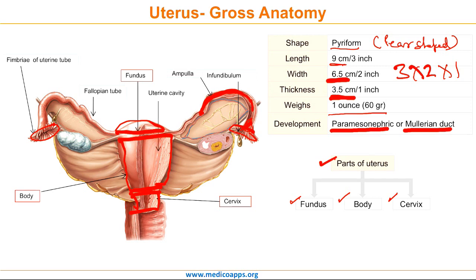The uterine cavity is triangular in shape, the base being formed by the internal surface of the fundus between the orifices of the uterine tubes, the apex by the internal orifice of the uterus, through which the cavity of the body communicates with the canal of the cervix.